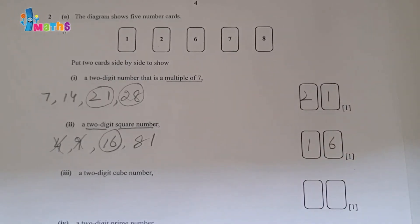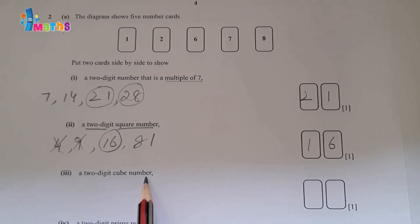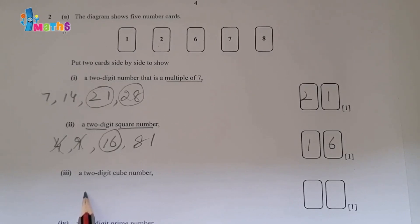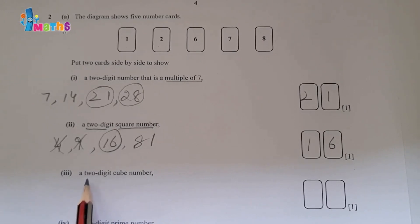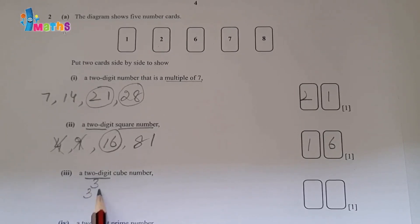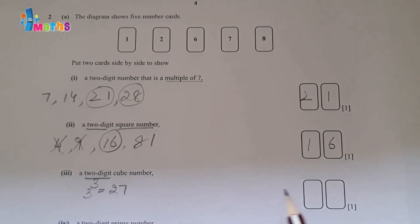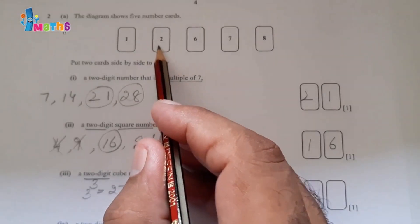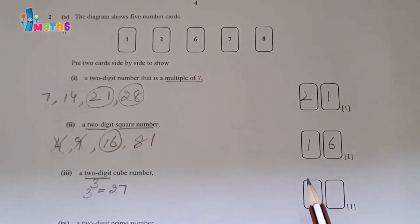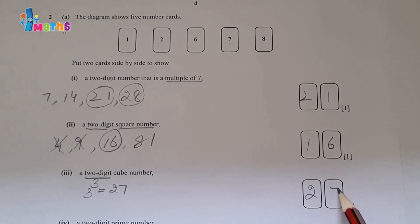Third part: a two-digit cube number. The cube of 2 is 8, which is a single digit. So we take 3: three cubed equals 27. We have cards for both 2 and 7, so we can write 27 as our answer.